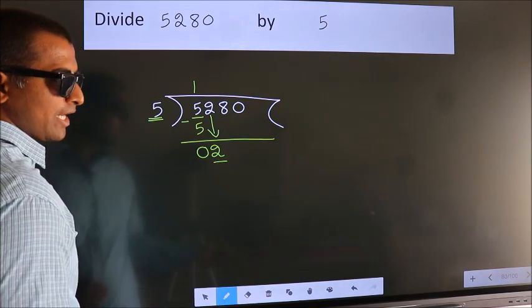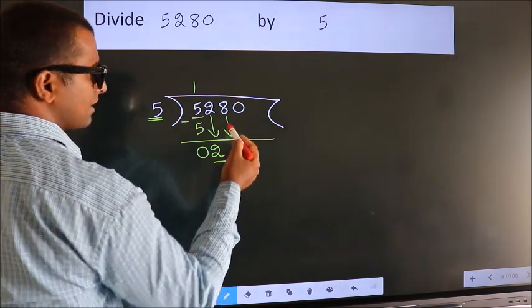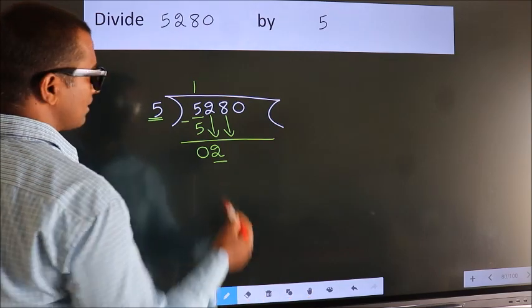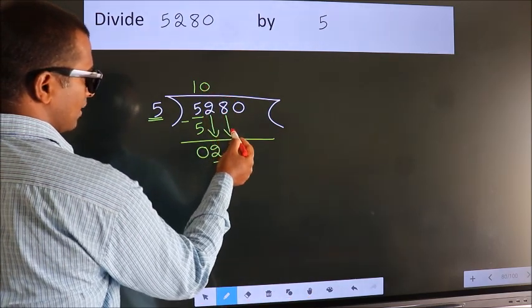So we should bring down the second number. And the rule to bring down the second number is put 0 here. Then only we can bring down this number.